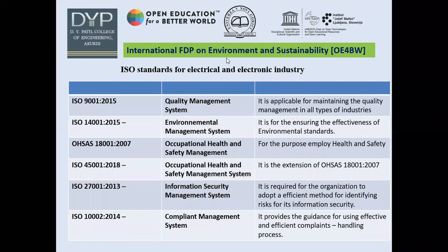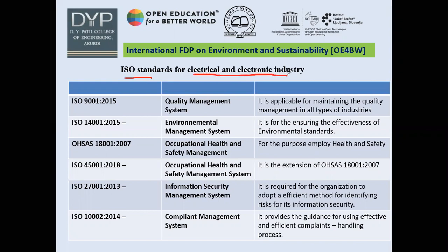In this slide, we will briefly talk about some ISO standards for the electrical and electronic industries. First, ISO standard 9001:2015 is for quality management systems, applicable to all kinds of industries to maintain quality management of any organization. The second standard is ISO 14001:2015, which is the environmental management system — ensuring that organizations are following environmental standards and reducing their negative impact on the environment.